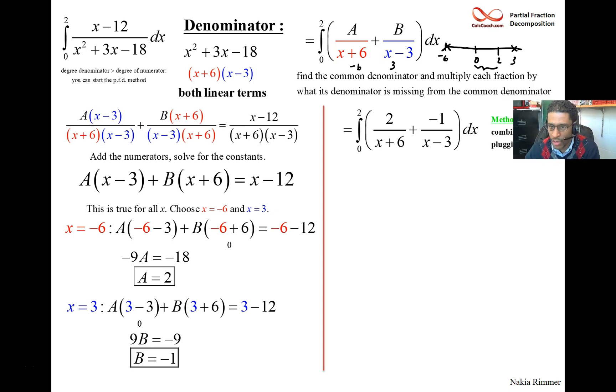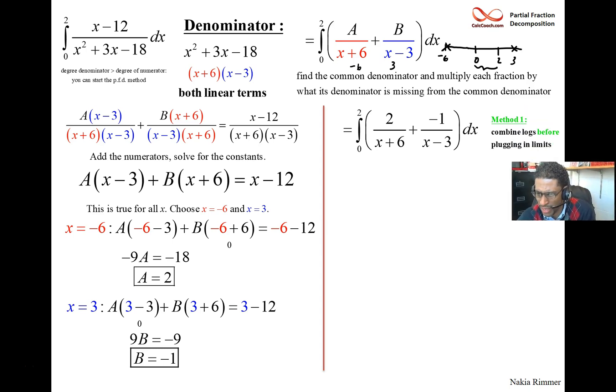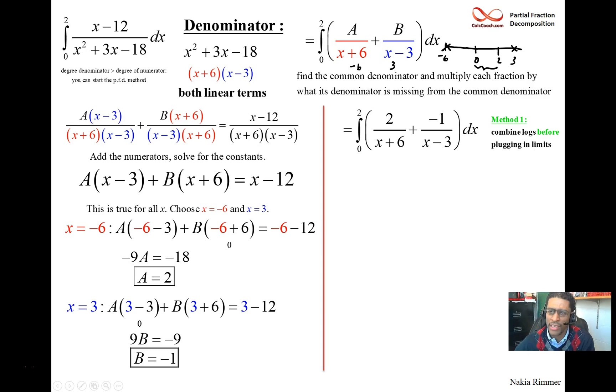But anyway, here we go. 2 times natural log of x plus 6 and negative 1 times the natural log of x minus 3. What we're going to do is look at this in two different methods. So you're going to integrate for sure and get 2 times the natural log of x plus 6 minus the natural log of x minus 3 using absolute values, bars, because you can't take the natural log of a negative number.